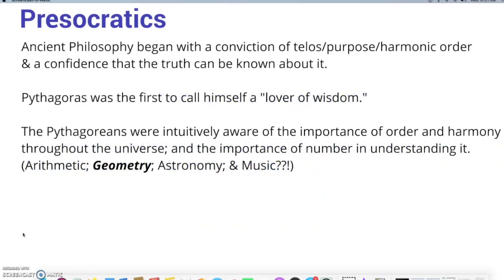In the point in time in which Socrates comes on the scene, followed by Plato and then Aristotle, we call these the Socratic philosophers or the Socratics. This is also the golden age of Athens. But philosophy had begun prior to Socrates — these philosophers we call the pre-Socratics. Ancient philosophy began with a conviction of telos, the idea that there is a purpose to nature. Entwined with this notion of purpose is order — a grand harmonic or grand cosmic order to all things. It was Pythagoras who first called himself a lover of wisdom, and the Pythagoreans were intuitively aware of the importance of order and harmony throughout the universe.